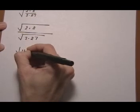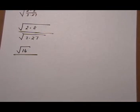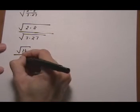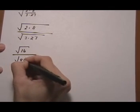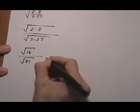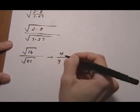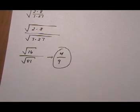Root 2 times 8 is the same as root 16. Well, that's nice because that's a perfect square. So, we're going to be able to take that root. And then, 3 times 27 is 81. Okay, that worked out nice too. So, now we can do, root 16 is 4. Root 81 is 9. And that would be our final answer.